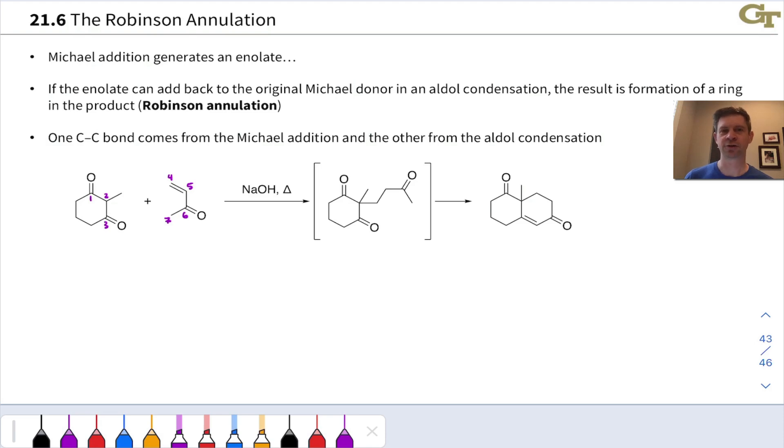In this video, we're going to take a look at a reaction called the Robinson annulation that combines the Michael reaction with aldol condensation. The basic idea of the Robinson annulation is that it's an annulation, first of all, it's a cycloaddition, really a stepwise cycloaddition reaction.